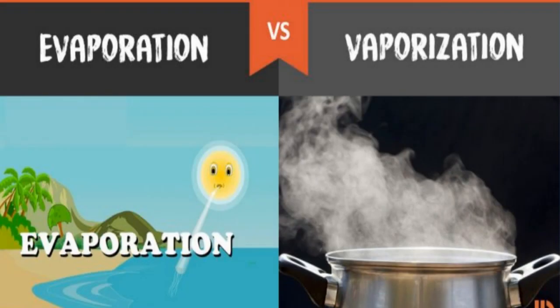In this picture, evaporation is happening because the sun is warming the ocean water. Vaporization is also there because the fire is boiling the water in the pan and forming vapors.